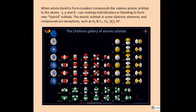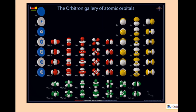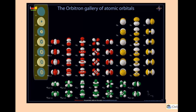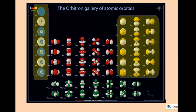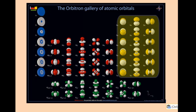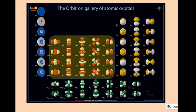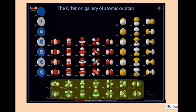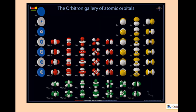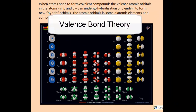Before I get into the nitty-gritty of hybridization, let's first remind ourselves what the atomic orbitals look like. On this chart, off to the left you'll see the s orbital, off to the right you'll see the p orbital, in the middle the five orientations of the d, and down at the bottom the seven orientations of the f. In the theory I'll describe, the f orbitals do not undergo hybridization.